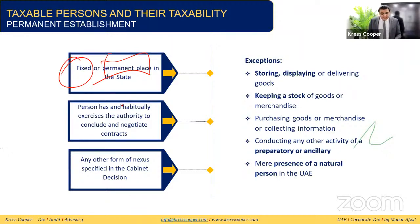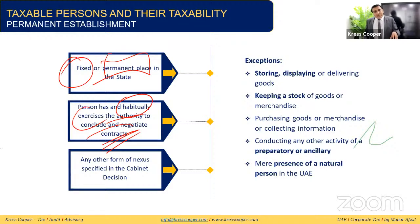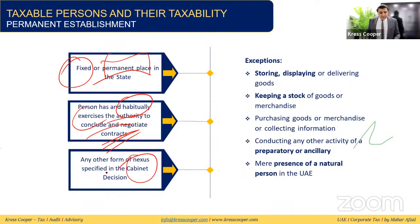A PE also arises where a person in the UAE habitually exercises authority to conclude and negotiate contracts on behalf of a non-resident person — specifically working for the non-resident person. Any other form of nexus by which the non-resident person is generating income from the UAE market, as defined in a cabinet decision, will also be considered a PE.